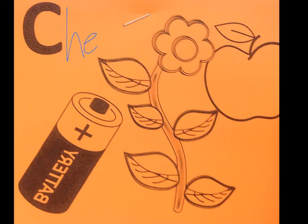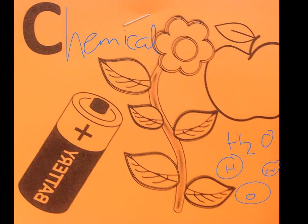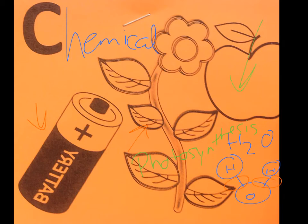Then we have the C — chemical energy. Chemical energy is found in the bonds of atoms. When we started talking about elements and compounds, we had seen how H2O would have two hydrogen atoms and one oxygen atom, and they're connected. Those bonds that connect them, that's where we have our chemical energy. Some examples of things that have chemical energy would be your battery, plants through the process of photosynthesis — that's where they make their glucose, so there's chemical energy in that glucose — and also chemical energy in the food that we eat.